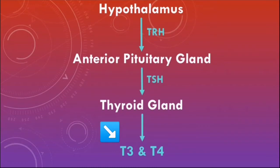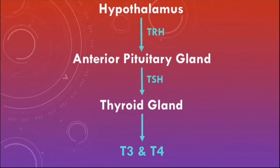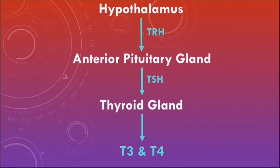T3 stands for triiodothyronine, and T4 stands for thyroxine. T3 and T4 will cause negative feedback and inhibit the production of further T3 and T4 by suppressing the hypothalamic-pituitary-thyroid axis.